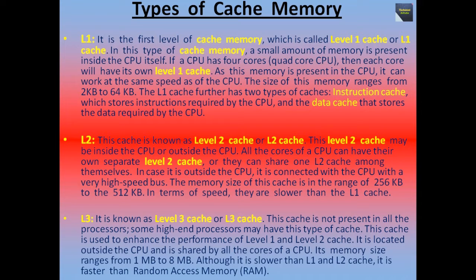Another type is L2, also known as level 2 cache. This level 2 cache may be inside or outside the CPU. All the cores of a CPU can have their own separate level 2 cache, or they can share one L2 cache among themselves. If it is outside the CPU, it is connected with the CPU via a very high-speed bus. The memory size of this cache ranges from 256 KB to 512 KB, and in terms of speed, L2 is slower than L1 cache.